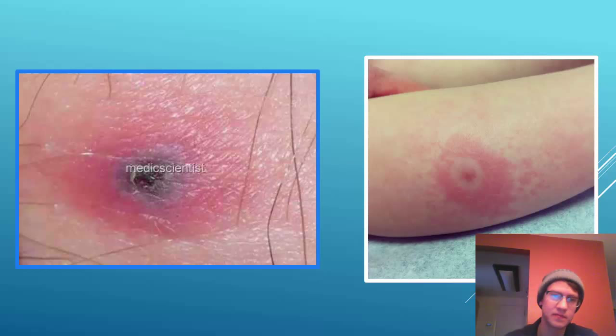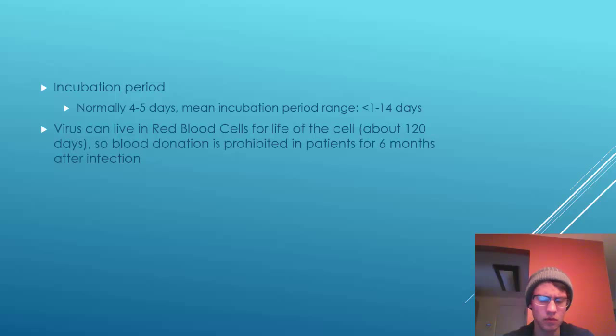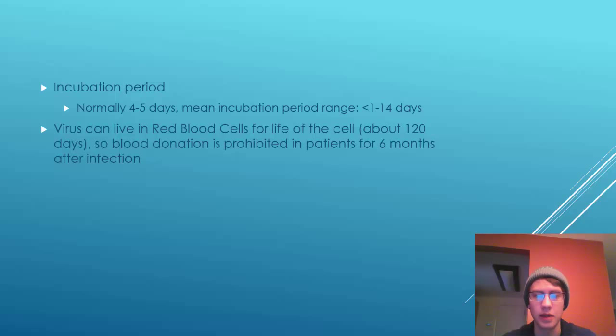The incubation period is normally about four to five days, with a mean range of less than one day to about 14 days. The virus can live in the red blood cells for the life of the cell, about 120 days. Blood donation is prohibited in patients for six months after infection. There has only been one case of the disease being transmitted through a blood transfusion, because the virus can remain viable in a refrigerated blood sample for up to 18 months. Other than that, there is no human-to-human transmission.